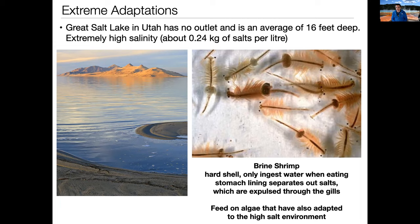The brine shrimp have to survive on something, so they feed on algae that have also adapted to that high-salt environment. In Utah in the spring, the brine shrimp have been dormant all winter, so the algae blooms and the Great Salt Lake kind of changes colors. But as soon as the brine shrimp pop back up they start eating all that algae. It's an interesting cycle of survival where the two of them depend on each other.